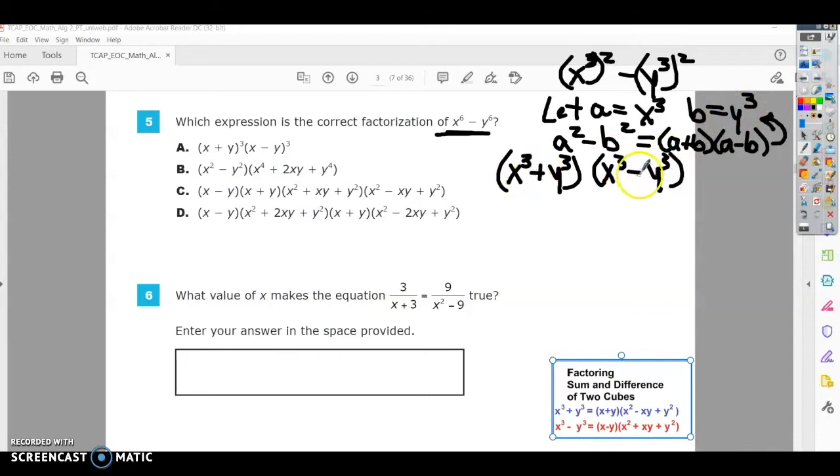Alright, now we have a sum and a difference of cubes. So you can see I've put the formulas down here. Again, this is formulas that you learn in Algebra 2 or Math 3, and these are formulas that you kind of need to commit to memory. The easiest thing is if you have a sum of cubes or a difference of cubes, you can remember something called SOAP.